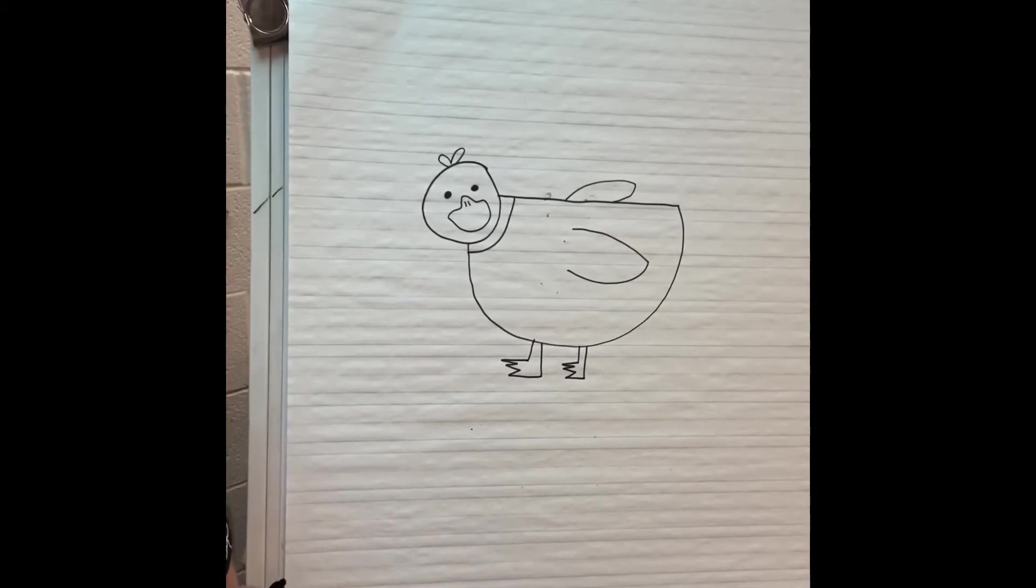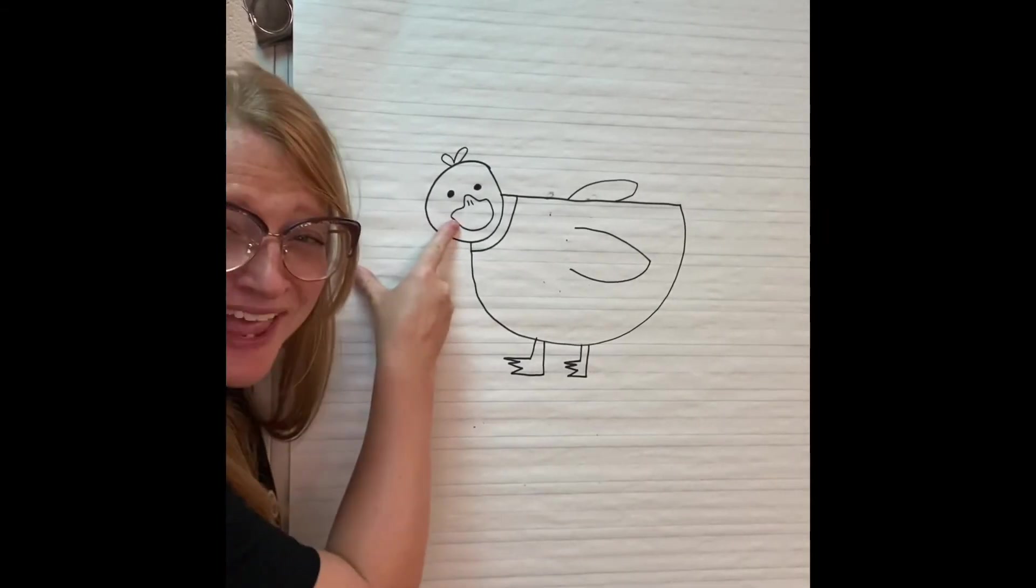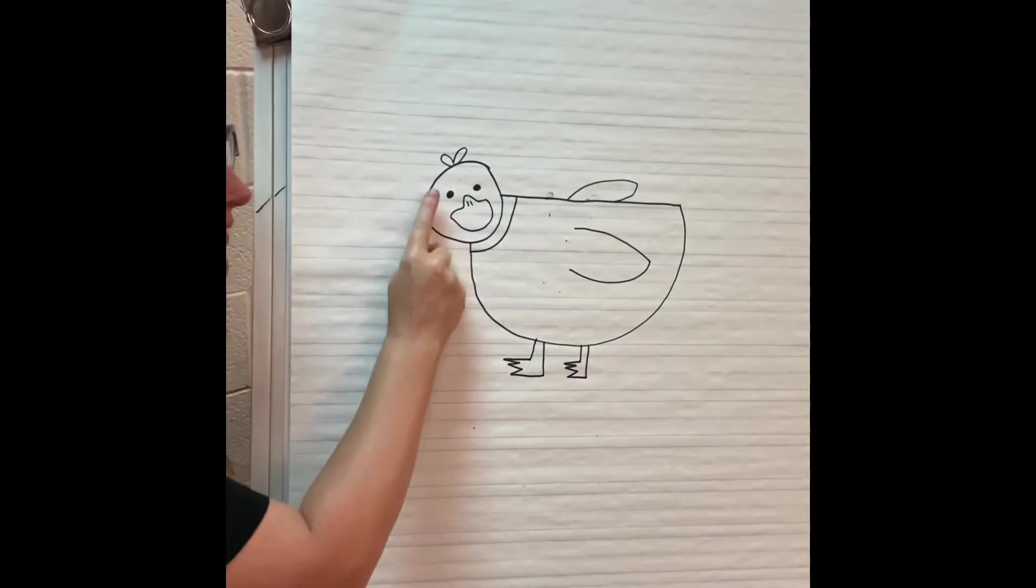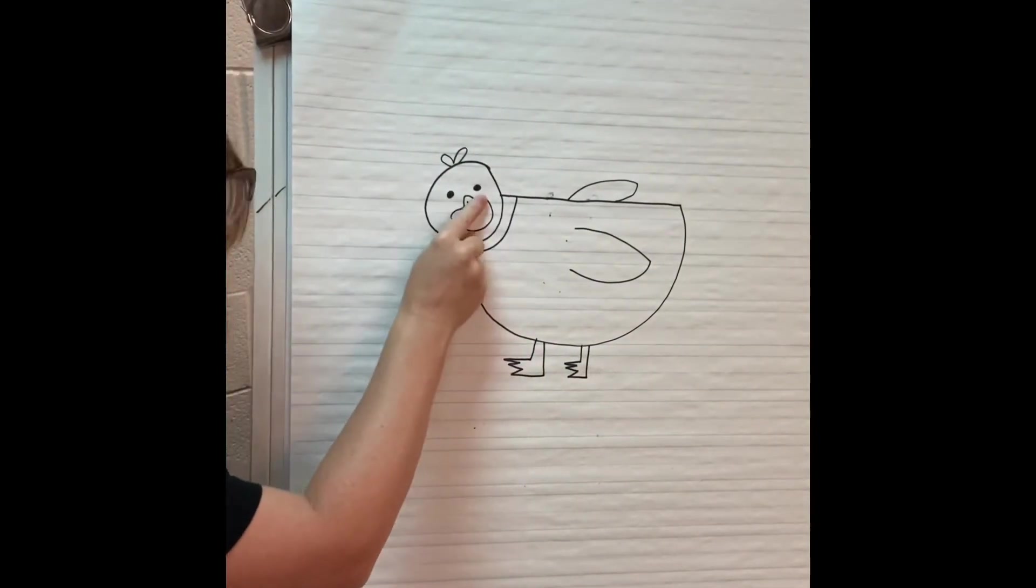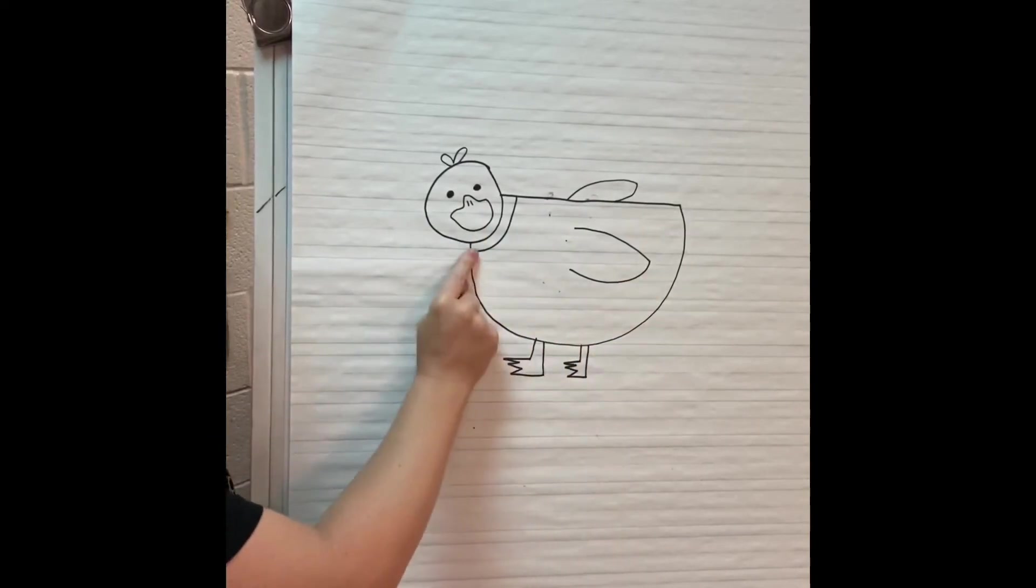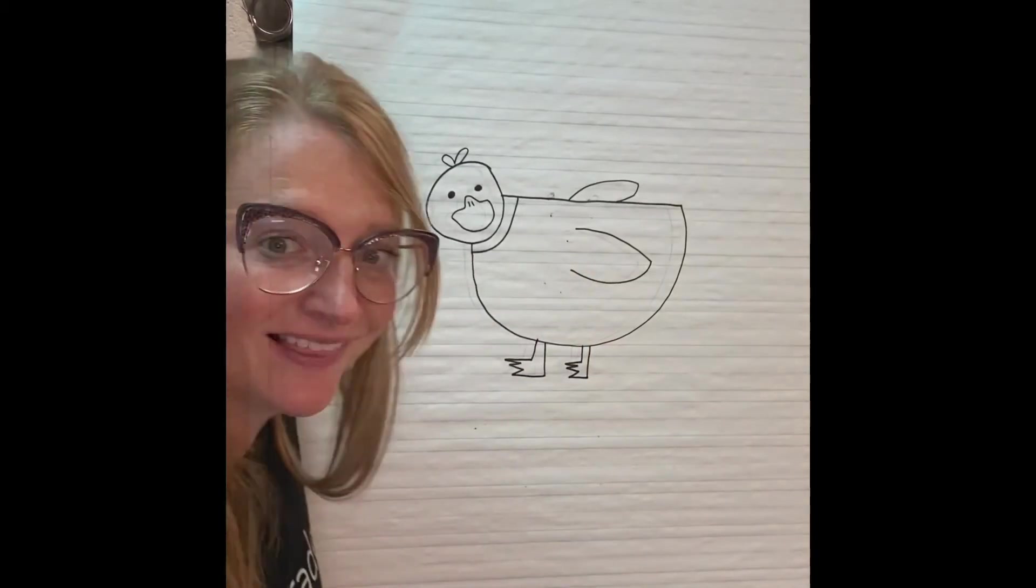All right. So for the mallard duck, because it's a male, a male mallard duck, the head is going to have to be what color? Yep. Green. So today for coloring, I'm going to need green, yellow, brown, and orange. All right. Let's get to coloring.